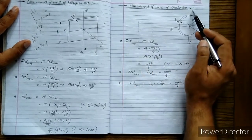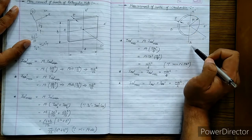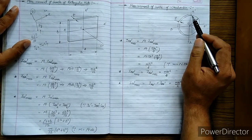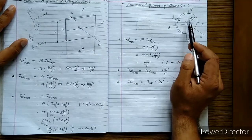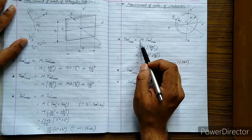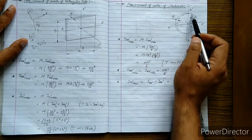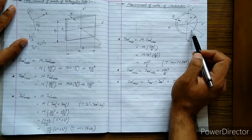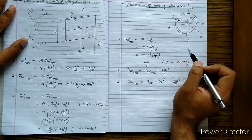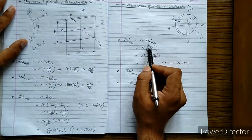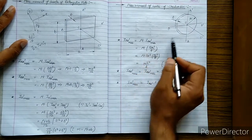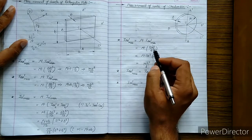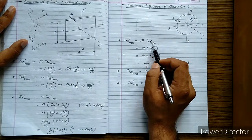Let us first solve for the mass moment of inertia of this circular disc along its axis AA', which is in its own plane. We will use the same fundamental approach: we write ρt multiplied by the area moment of inertia of the circular face about the same axis AA'. That is written as ρt times the area moment of inertia of the circular disc about AA'.